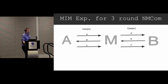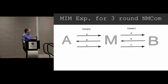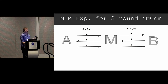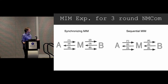I just want to justify this a little bit. This is the man-in-the-middle experiment when we're talking about a three-round commitment scheme. On the left you have A, B, C — those are the rounds. On the right you have A prime, B prime, C prime. The man-in-the-middle adversary gets to control the order in which messages are sent. For a three-round scheme, there are two options: the synchronizing man-in-the-middle, where he plays the left side and right side in sync, and the sequential man-in-the-middle, where he plays the left side and then the right side.